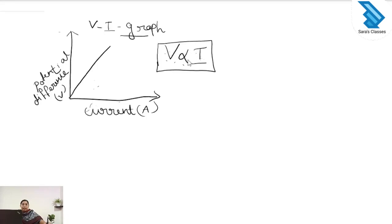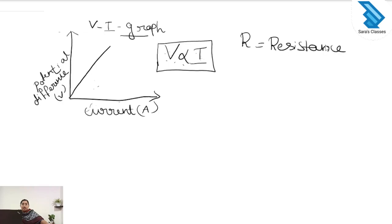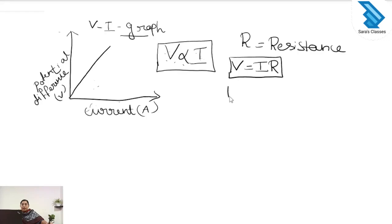To remove the proportionality sign, we introduce a constant R. This constant R is known as the resistance of the conductor. We can write that V is equal to I into R, where R is the resistance, V is the voltage, and I is the current.